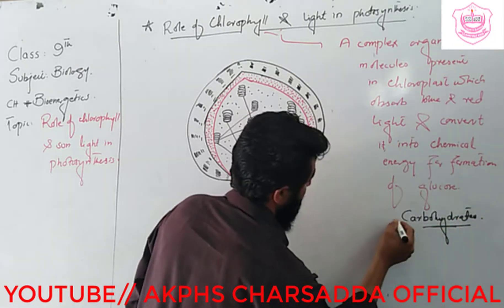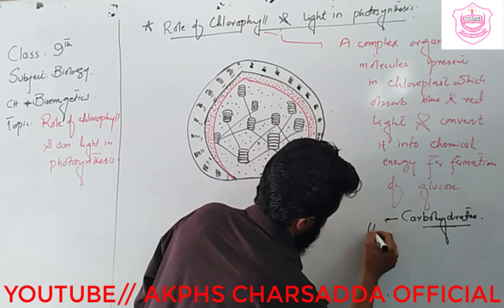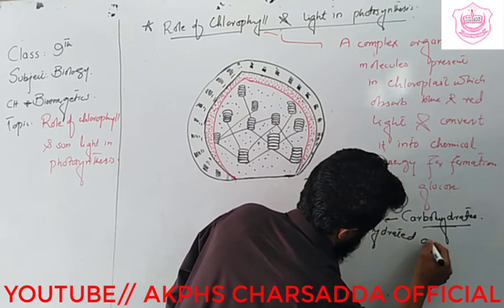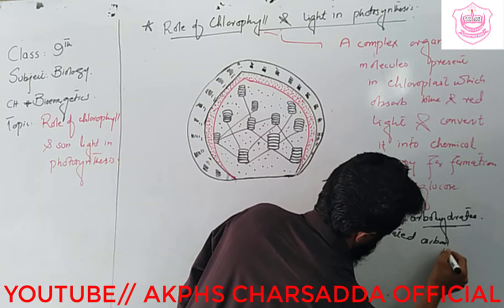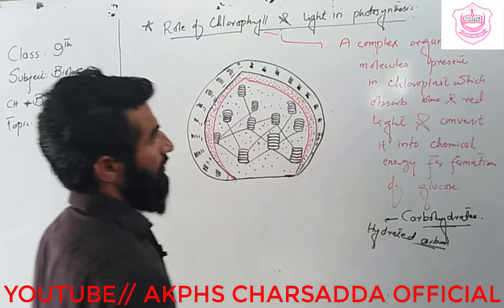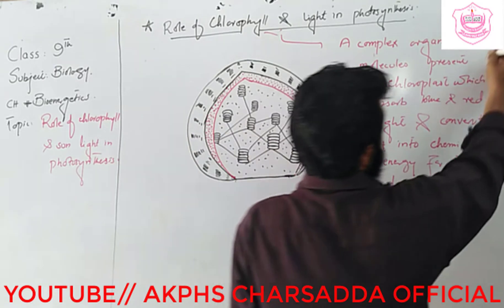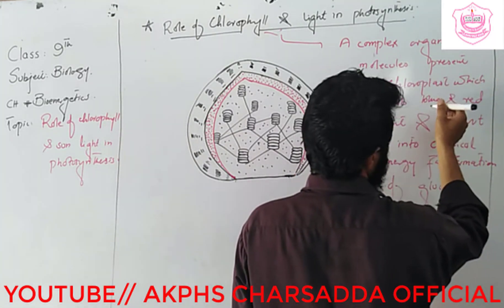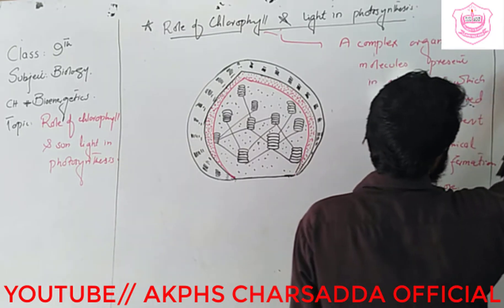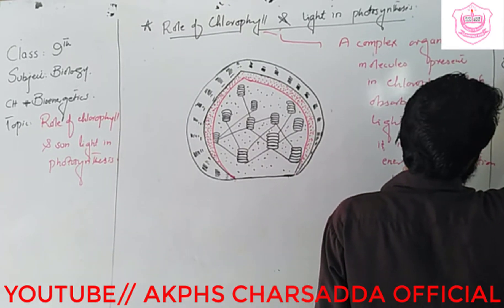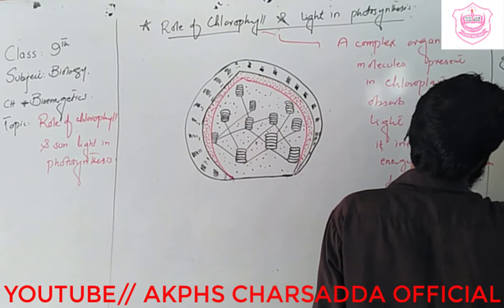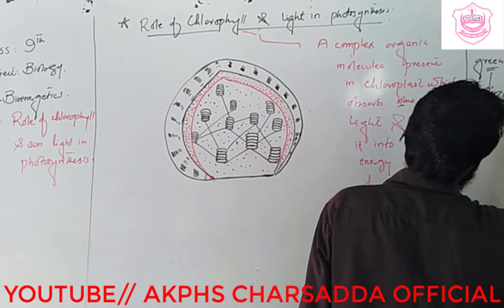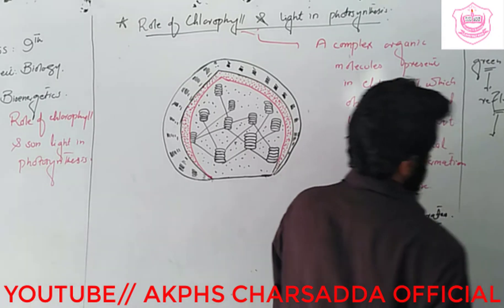Chlorophyll only absorbs blue and red light, and the green portion of sunlight is mainly reflected. That is why the color of chlorophyll appears green.